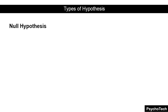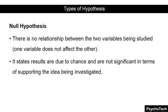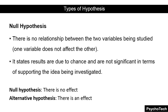The null hypothesis states that there is no relationship between the two variables being studied — one variable does not affect the other. It also states that results are due to chance and are not significant in terms of supporting the idea being investigated. In simple terms, null hypothesis means there is no effect, and alternative hypothesis means there is an effect.